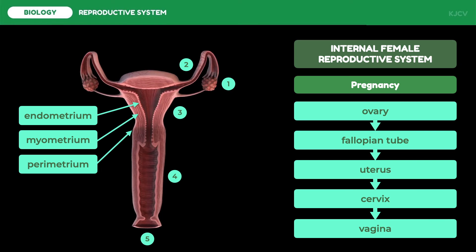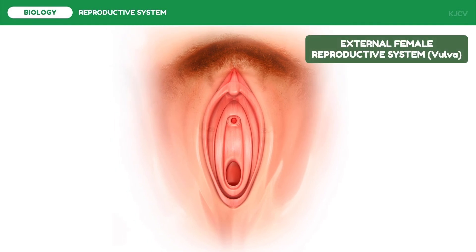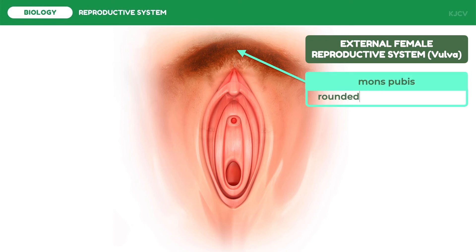Now let us discuss the external female reproductive system. Collectively, the external female reproductive system is called the vulva. First, the mons pubis is a mound of tissue that is prominent and commonly covered in pubic hair. It acts as a cushion during sexual intercourse. Sebaceous glands are also found in the mons pubis, which secrete pheromones to stimulate sexual attraction.